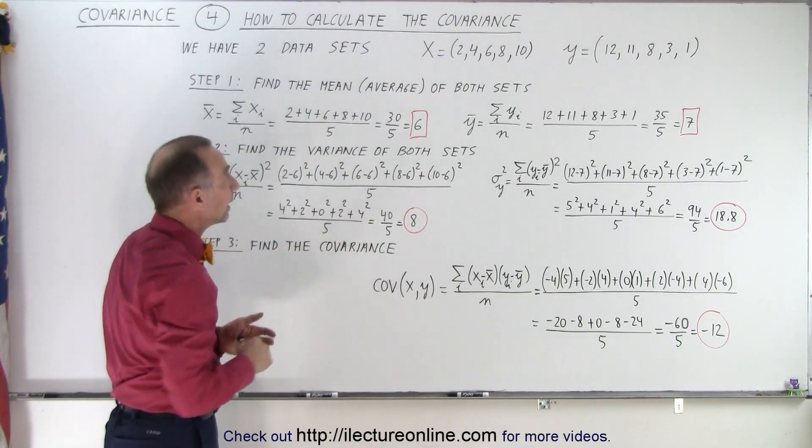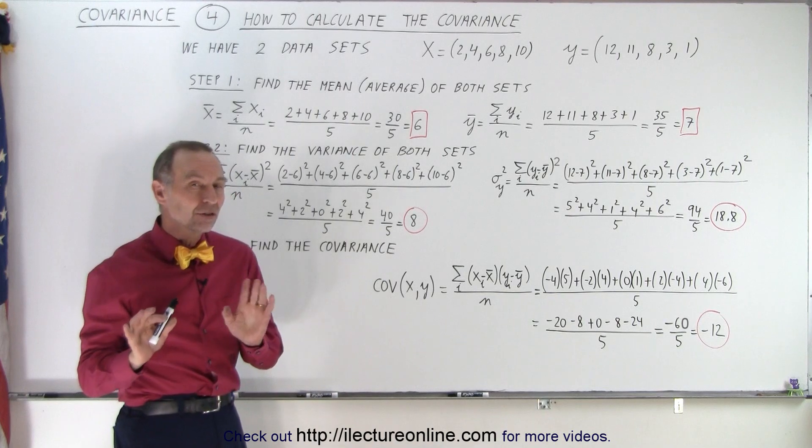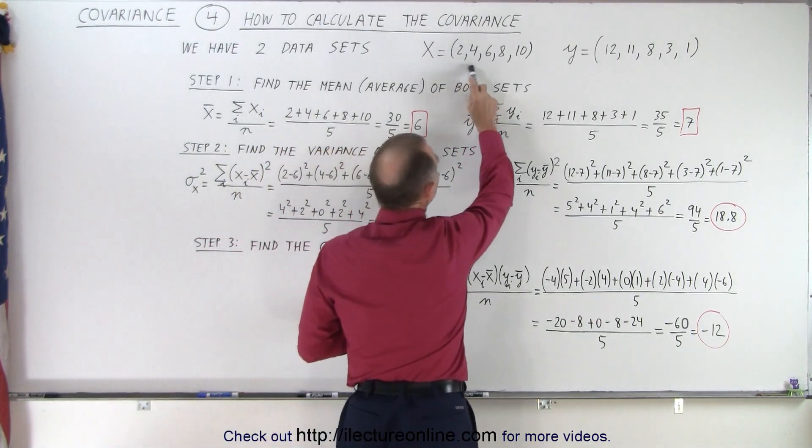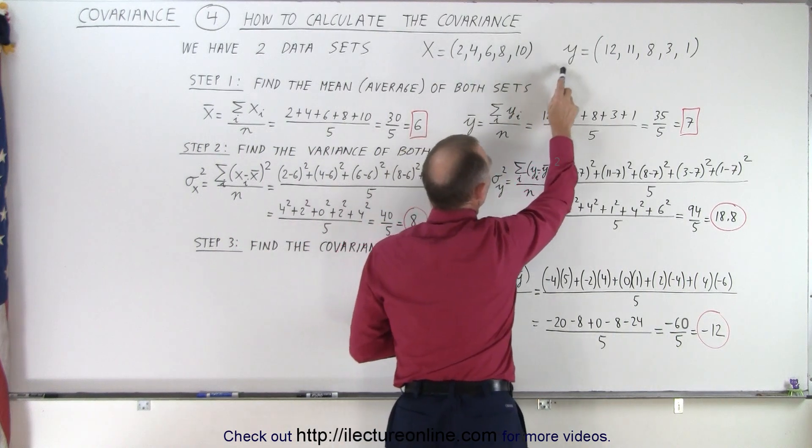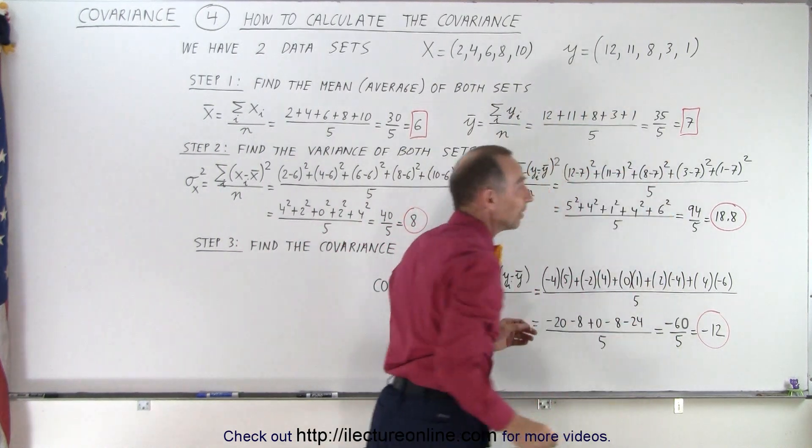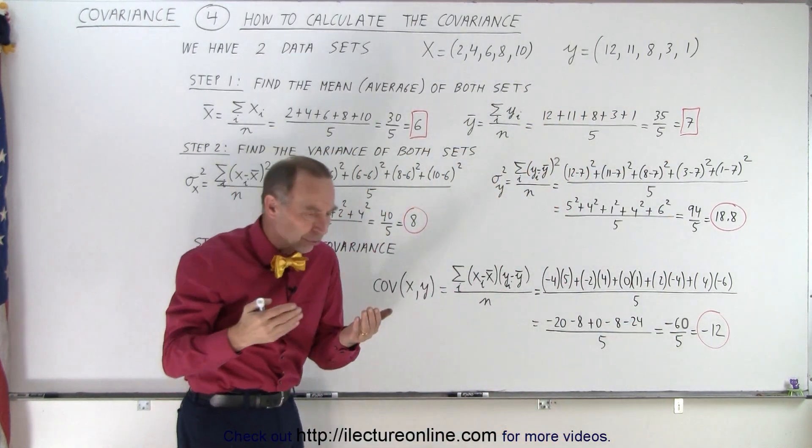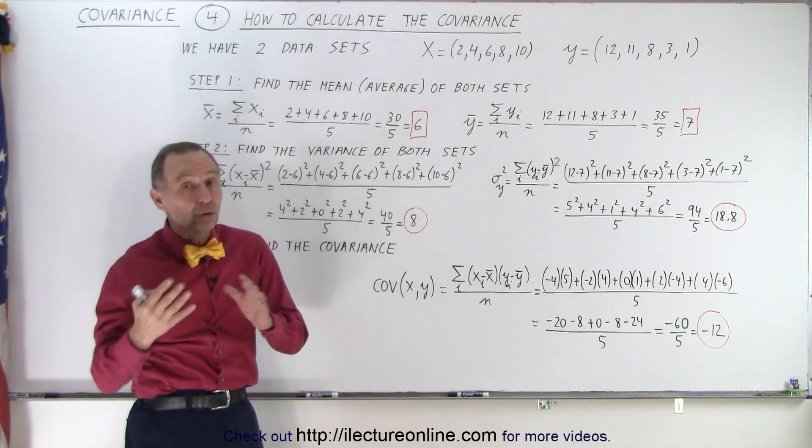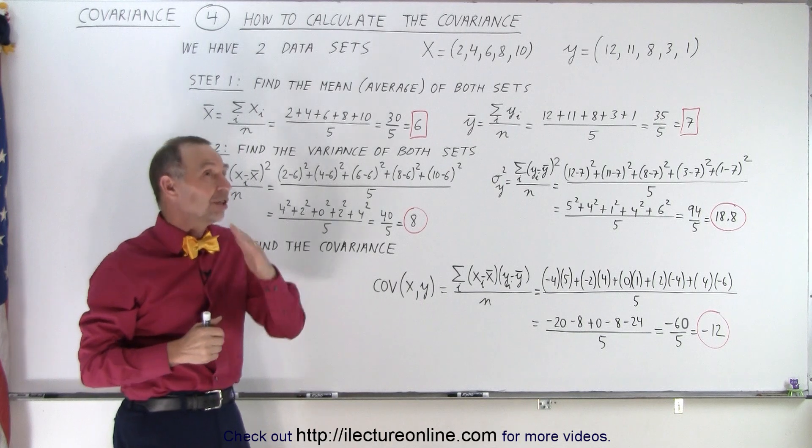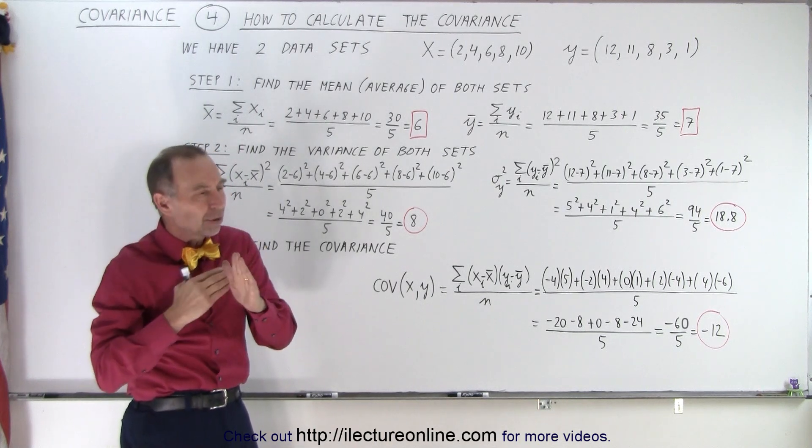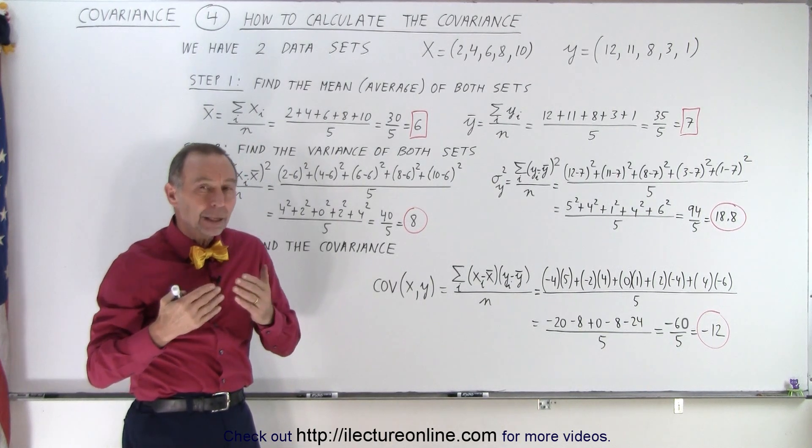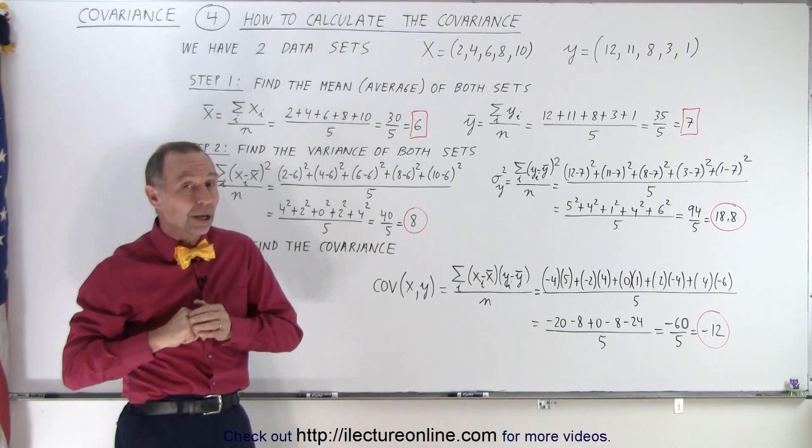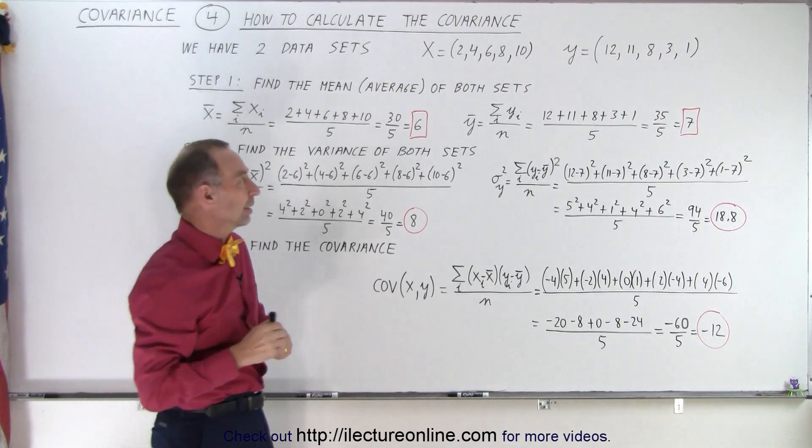So we have the X and the Y dataset. Notice there's a little bit of a difference here. On the X dataset, the numbers increase. On the Y dataset, the numbers decrease. To calculate the covariance, we do that to find the relationship between the two datasets. Now if one is increasing and the other one is decreasing, that would provide a kind of negative relationship. So let's see what we end up with in the covariance calculation.